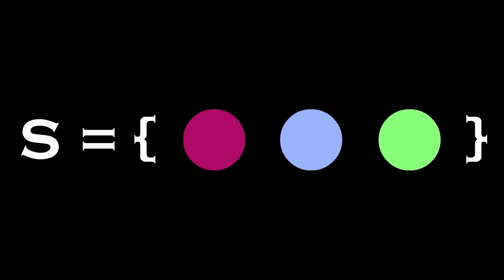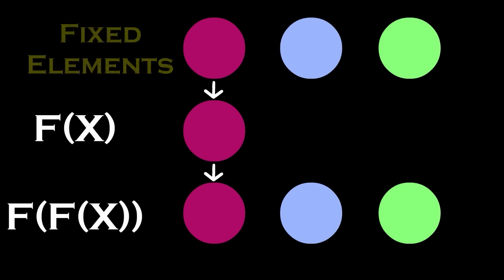To understand this a bit better, consider a set s with three elements. If we want to make a function f that acts on the set in involution, it means we need to come up with a function that if you apply it twice, you get the original elements back. The simplest possibility is to have an element mapped to itself, which means that if you apply the function twice, you still get the same element.